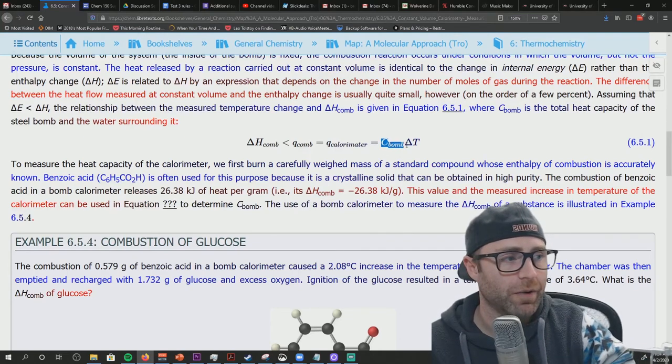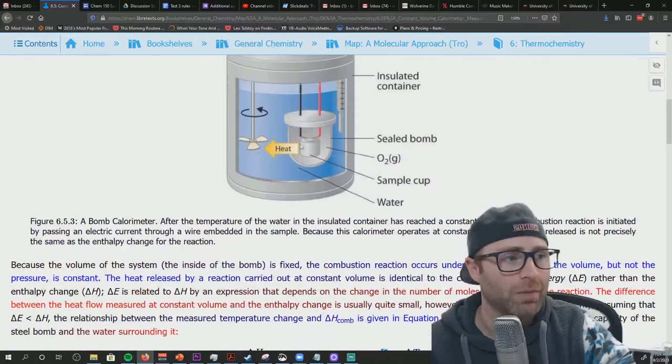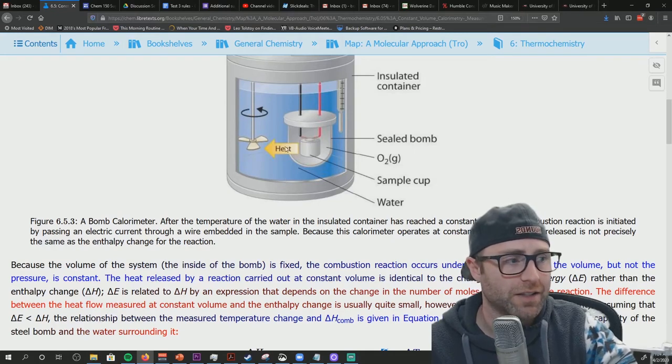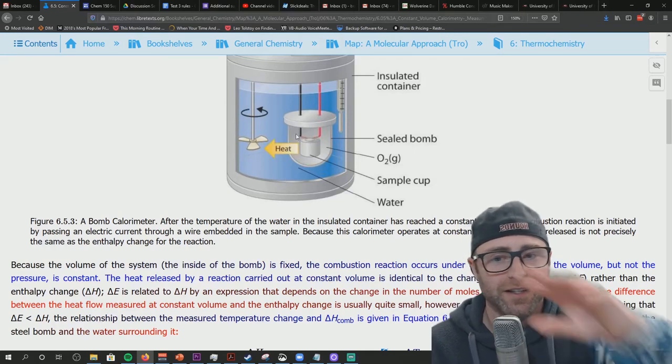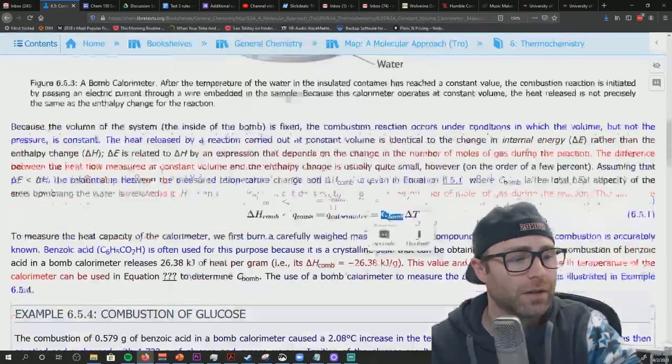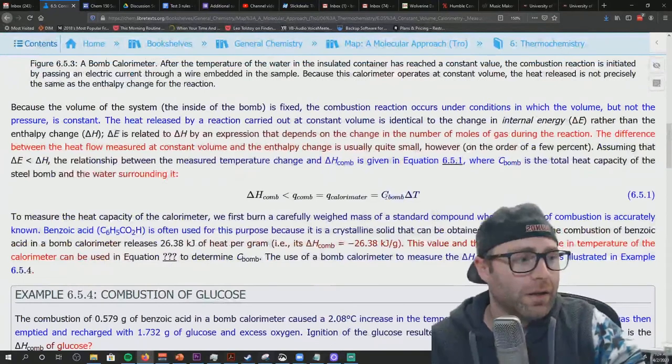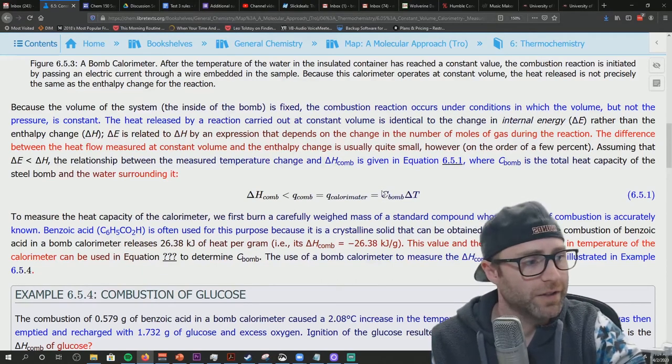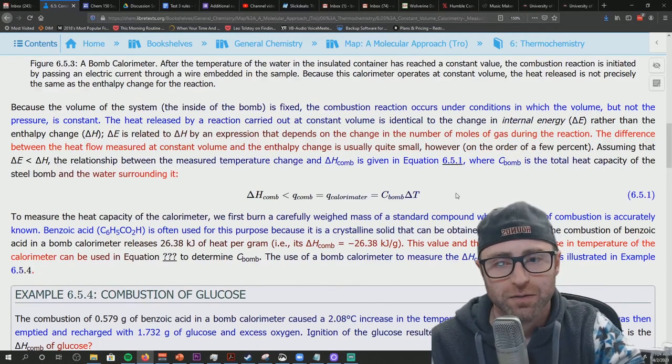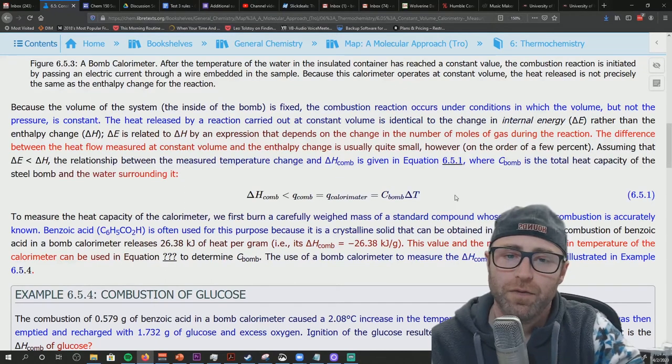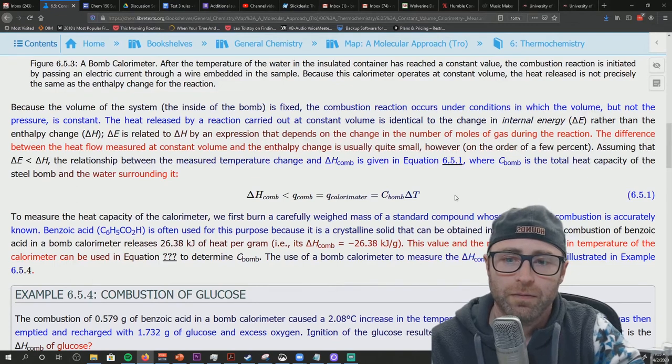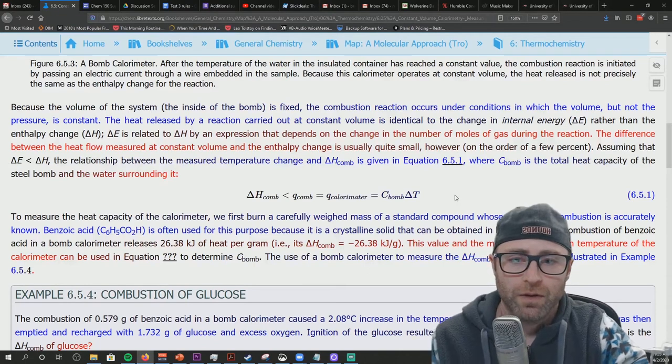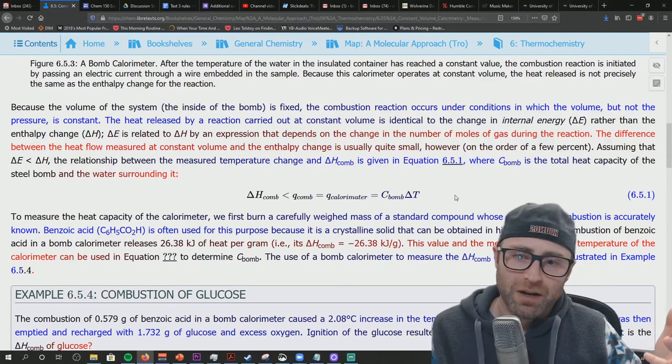So this number right here, this C bomb, capital C bomb is going to correspond with this entire shebang. It's not just the water. It's not just the sample holder. It's not just the wires. It's the whole apparatus. So that whole apparatus, instead of trying to figure out the water individually, the metals and blah, blah, blah, we just say, it's just the heat capacity of the bomb itself times delta T. And delta T is always going to be that temperature final minus temperature initial. And that's why we've got the thermometer stuck in the thing.